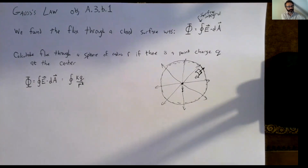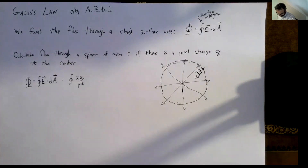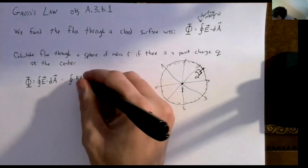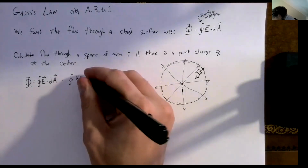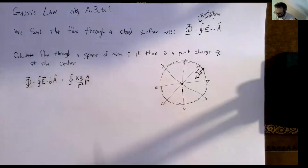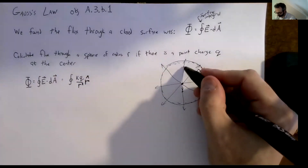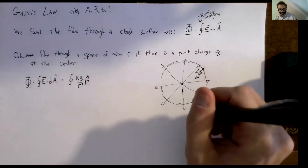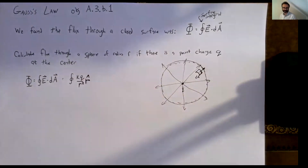The easy thing to forget when we write down Coulomb's Law is that it is a vector. If we want to include the direction, it's in the r̂ direction — it always points radially outwards. At any point on the sphere, the radius vector points directly outward. So we need to have r̂ in there for the electric field.